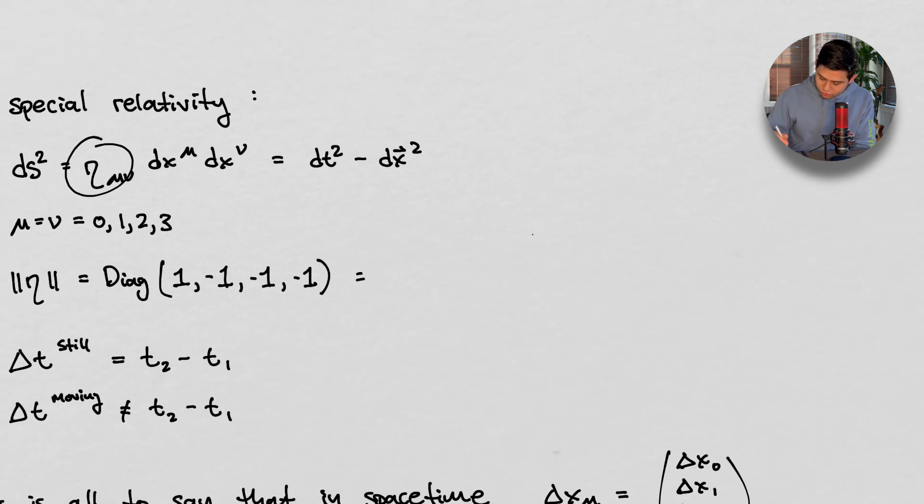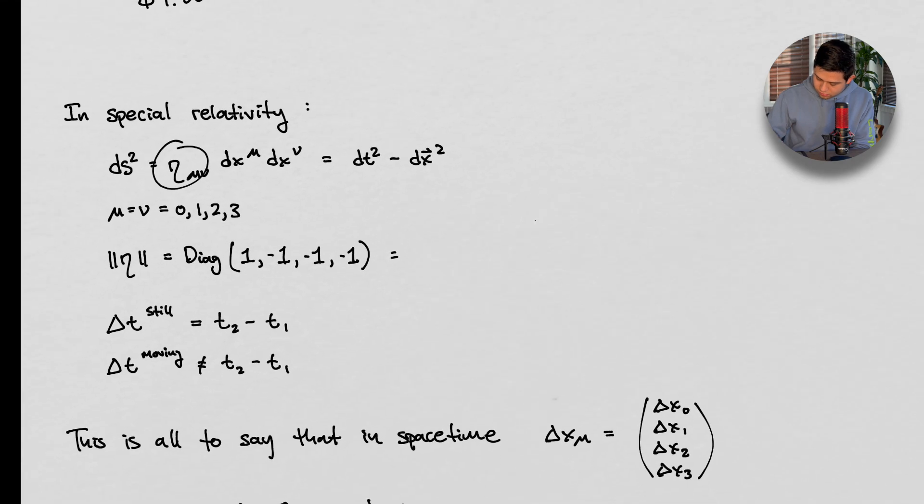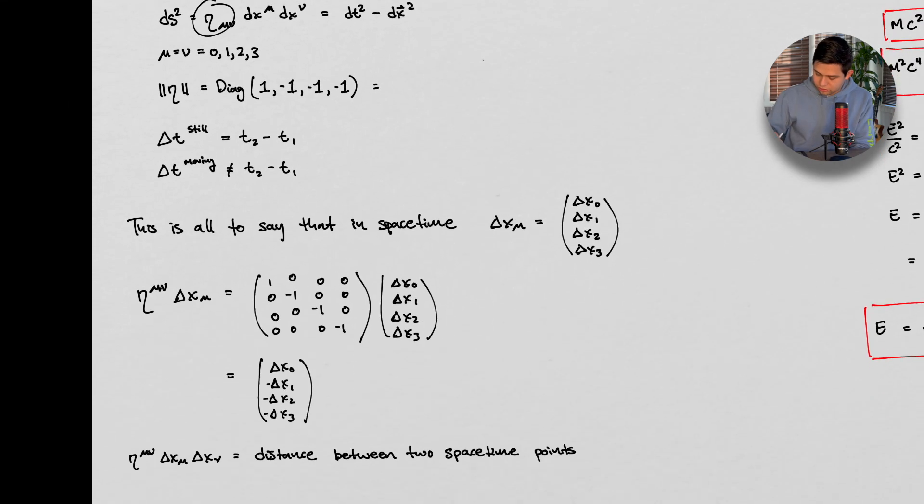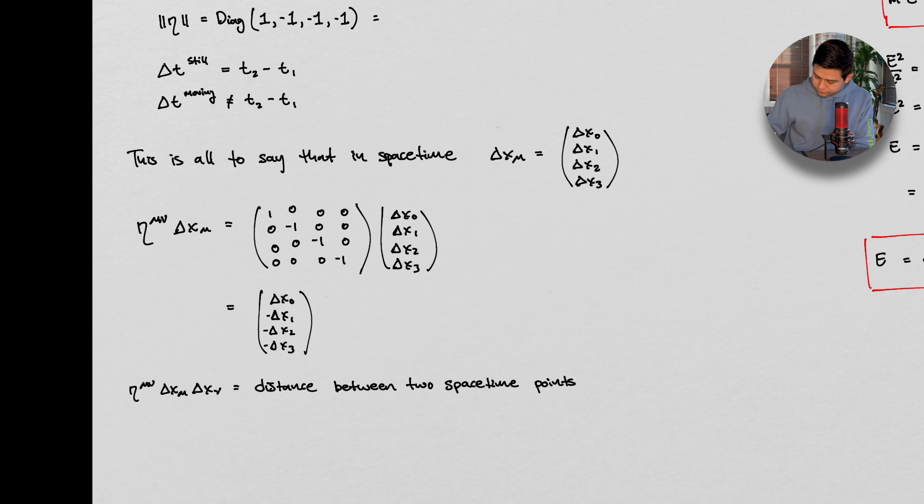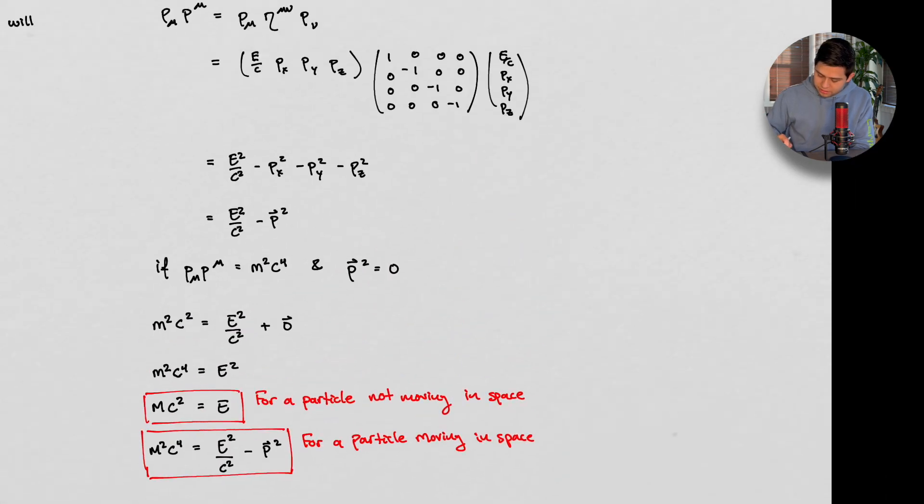And so a distance between two space time points looks like this. So we define the two space time points, we slap on the Minkowski metric, and we get this guy right here. Because we have our spatial components and our temporal component there. All right, let's take a look now at just some examples.